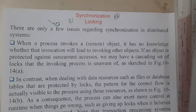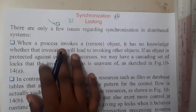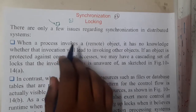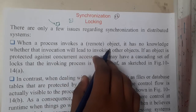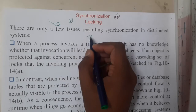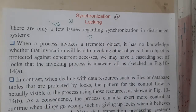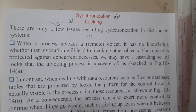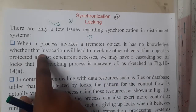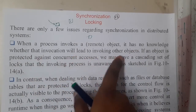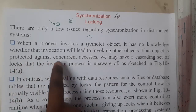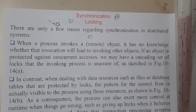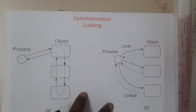Even with locking we are having two issues. When a process invokes a remote object, assume that you are invoking a remote object but you don't know the exact address — you don't know which object you are invoking, no names, no numbers, nothing. It has no knowledge of whether that invocation will lead to invoking other objects. If an object is protected against concurrent access, we may have a cascading set of locks that the invoking process is unaware of.